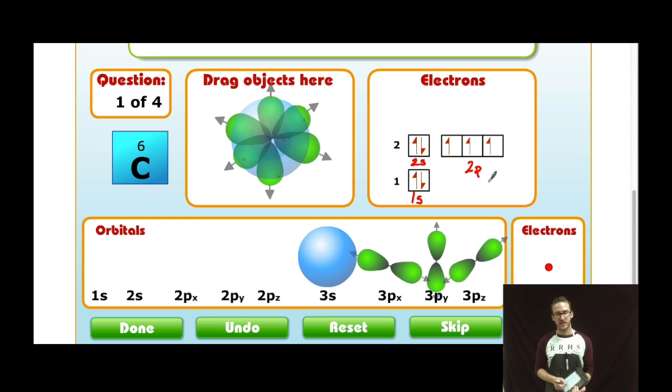What a standard notation is going to do is sort of condense this down a little bit, avoid all the craziness with the arrows. So I've got two electrons in my 1s sub-level, 1s superscript 2.